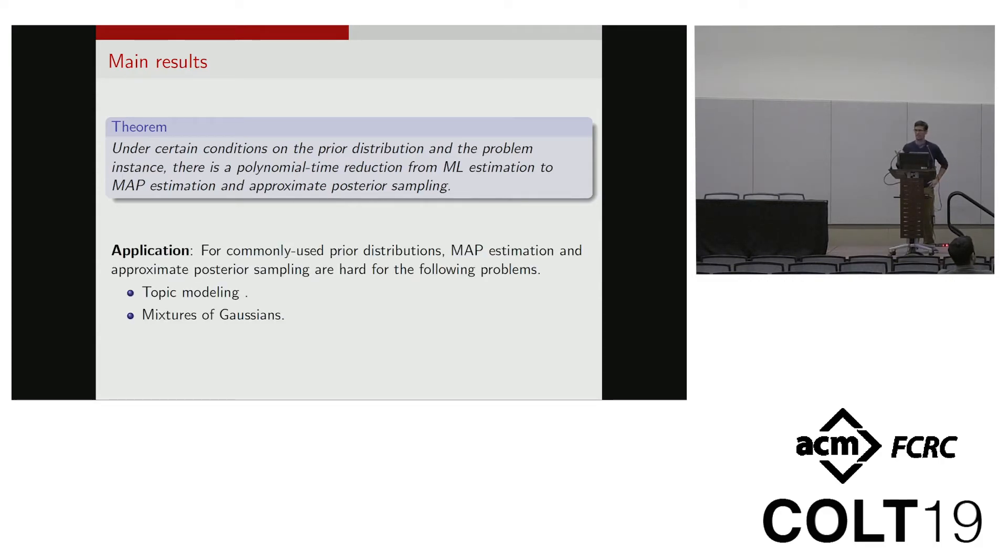Then we apply it to two cases of interest and show that MAP estimation and approximate posterior sampling are hard for topic modeling and for mixtures of Gaussians. Okay, so that's it.